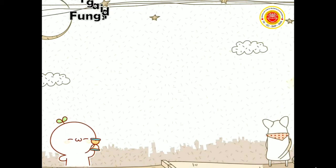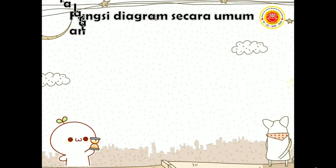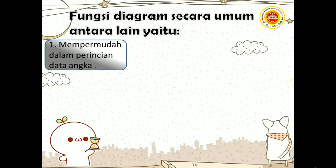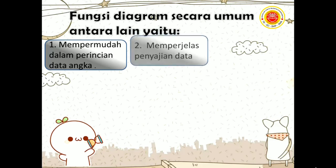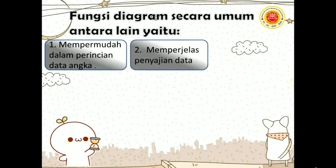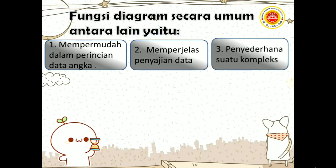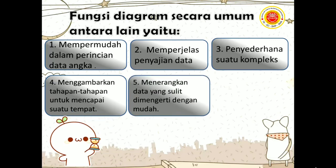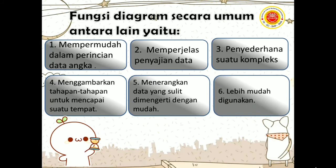Fungsi diagram secara umum antara lain: pertama, mempermudah dalam perincian data angka. Kedua, memperjelas penyajian data. Ketiga, penyederhanaan suatu yang kompleks. Keempat, menggambarkan tahapan-tahapan untuk mencapai suatu tujuan. Kelima, menerangkan data yang sulit dimengerti dengan mudah. Dan yang keenam, lebih mudah digunakan.